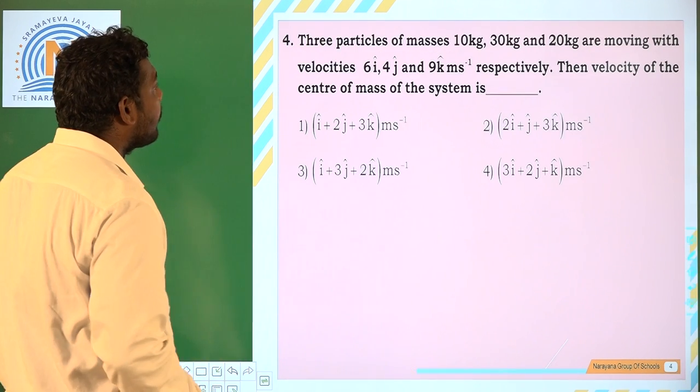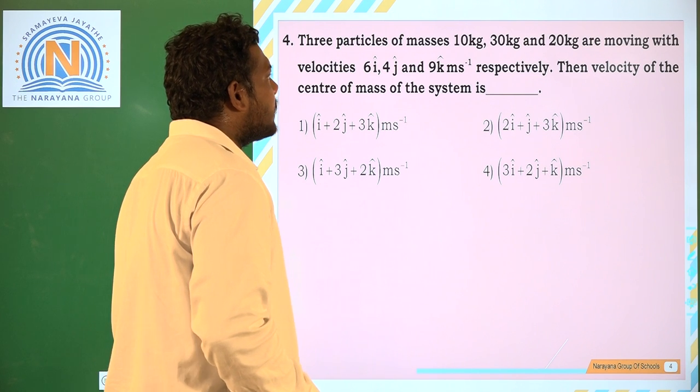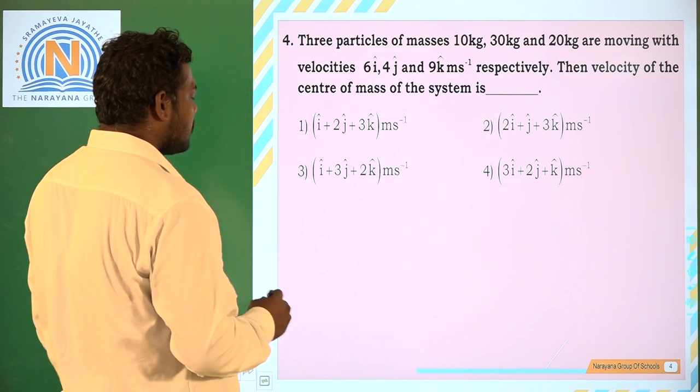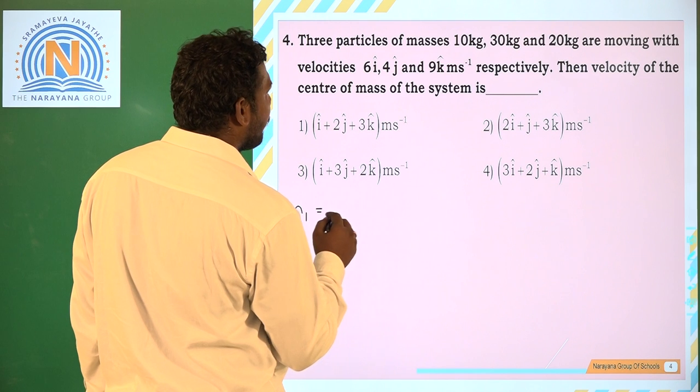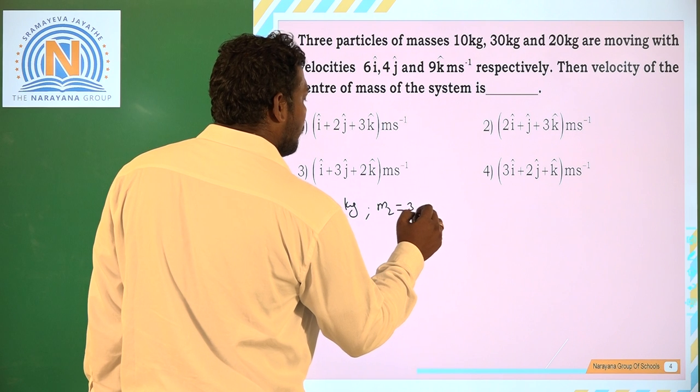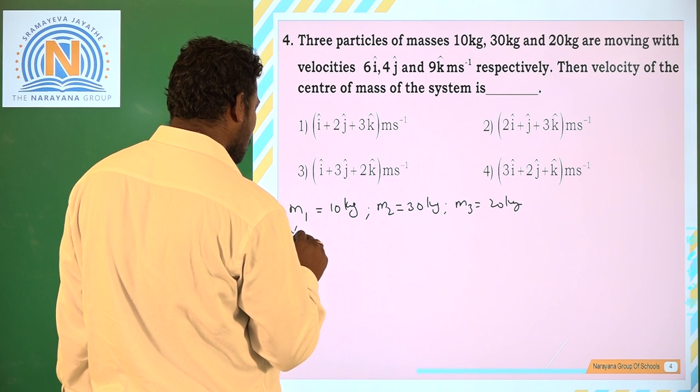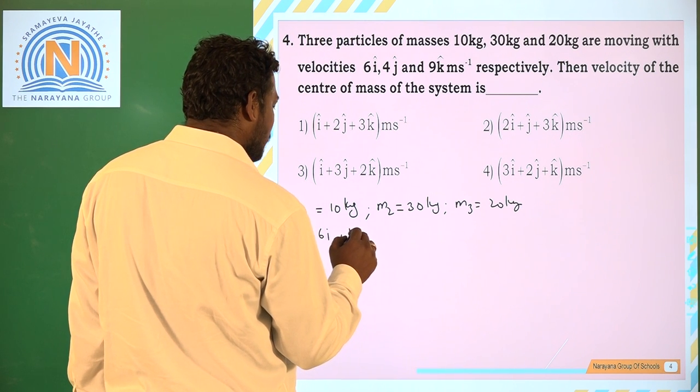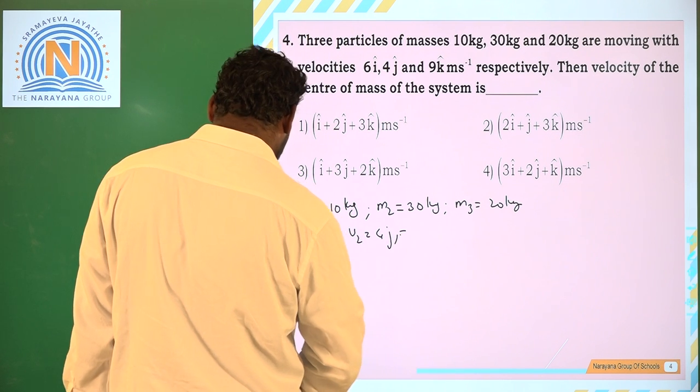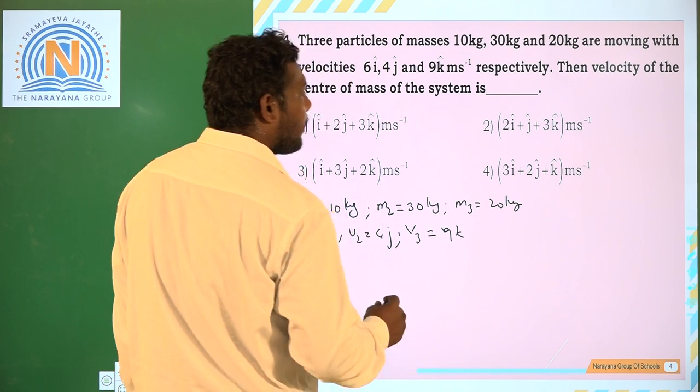Let us go with the 4th question. 3 particles of mass 10 kg, 30 kg and 20 kg are moving with 6i, 4j and 9k meters per second respectively. Then velocity of center of mass. Now M1=10 kg, M2=30 kg, M3=20 kg. V1=6i, V2=4j, and V3=9k.